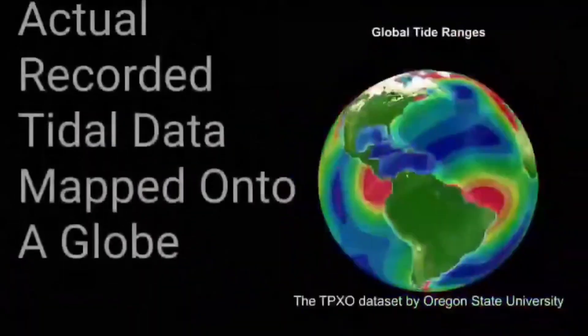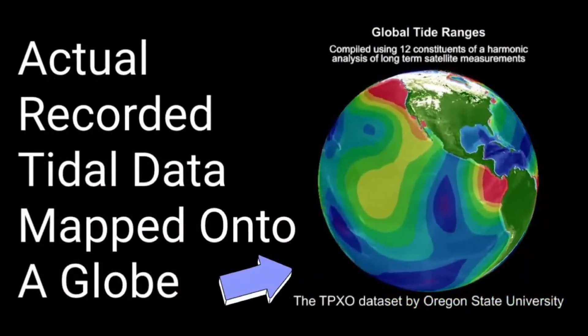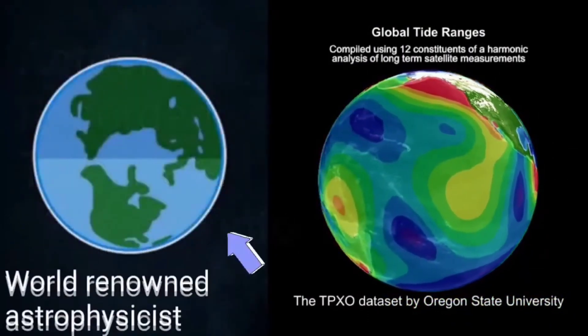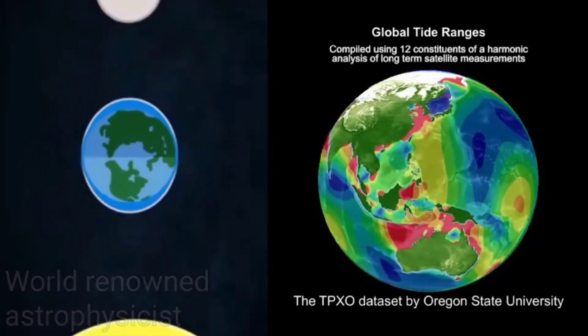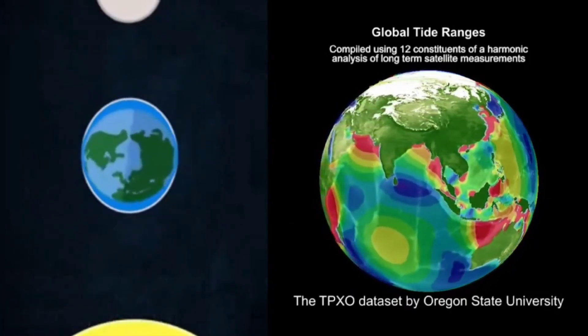So when we say the water rises and falls tidally, what's happening is we are rotating into the bulge and then out of the bulge — so the bulge is already there. Is this dude really saying that the land of the earth moves underneath the water and the water is staying still? The water gets high and gets low.